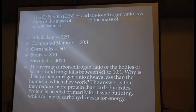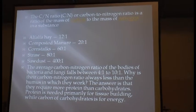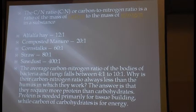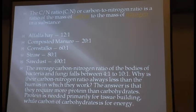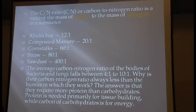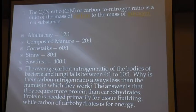Carbon-nitrogen ratio means exactly the ratio of the mass of carbon to nitrogen in a substance. Here are some common carbon-nitrogen ratios you'll see out there — some are lower and some are significantly higher. What I find interesting is that bacteria and fungi — which make up the bulk of the soil biota — have C:N ratios generally between 4 to 1 and 10 to 1.